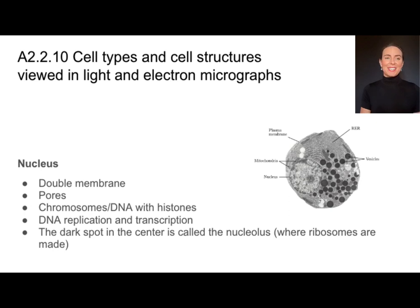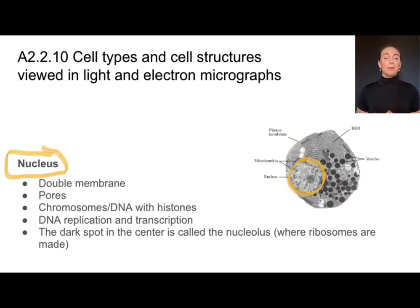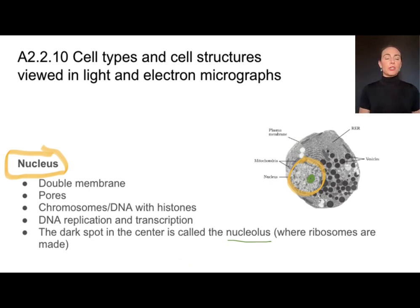These are all organelles found in eukaryotes, and I'll show you how to find them in micrographs. If I'm looking for the nucleus, I'm looking at this structure right here — it's got a double membrane around it, and that membrane has holes called pores. We're going to find all of the DNA in there, and in eukaryotes that's associated with histone proteins. This is the site of DNA replication and transcription. One thing I like to look for is this little dark spot called the nucleolus — that's where ribosomes are made — and it can help us identify where the nucleus is.